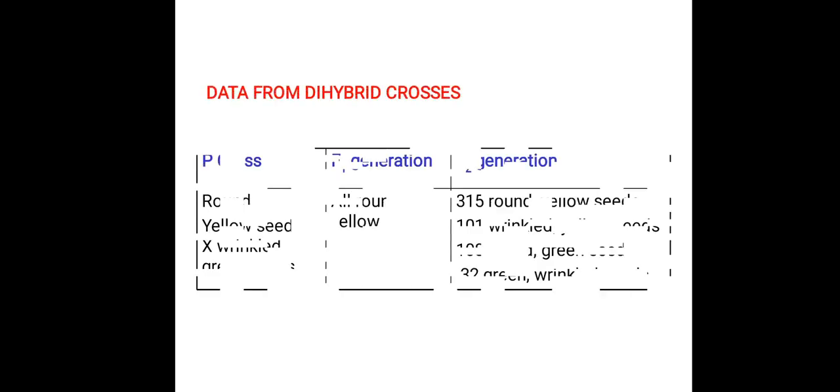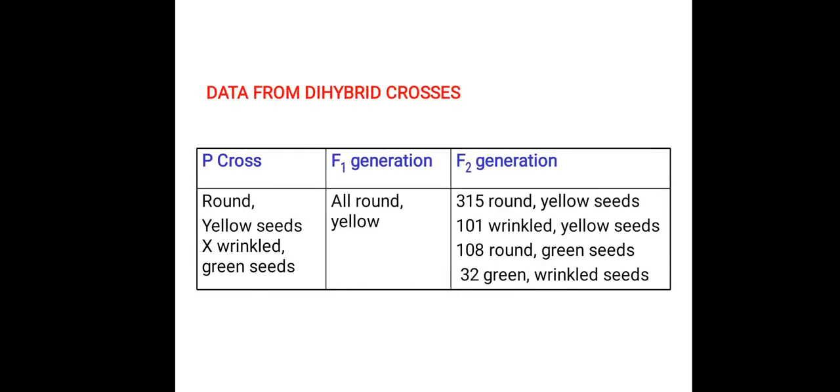Data from dihybrid crosses, round and yellow seeds crossed with wrinkled and green seeds. The F1 generation we got was all round yellow. And the F2 generation we get 315 yellow round seeds which were parental ones or resembling to the parents. Then 101 wrinkled yellow seeds, a new recombination. 108 round green seeds, again a new recombination. And 32 green and wrinkled seeds, again resembling to the parents.